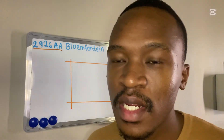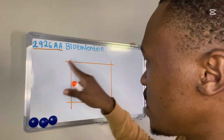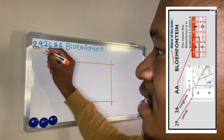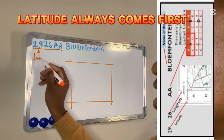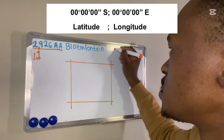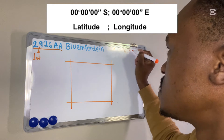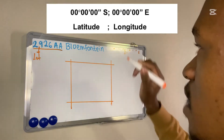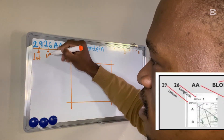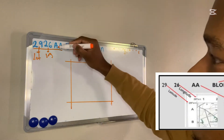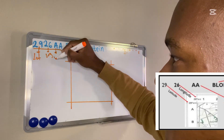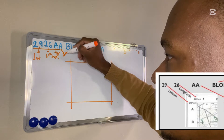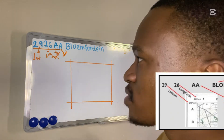The map code is 2926AA — Plumefontaine. The first thing I did was draw a block. Before going to the block, I want us to know a few things. The '29' represents 29 degrees latitude. Latitude always comes first — that's why when you give coordinates you give degrees, minutes, seconds South first, then degrees, minutes, seconds East. South is always on the latitude side. The '26' represents 26 degrees longitude. The first letter 'A' represents the big letter or big block, and the second letter represents the small letter or small block.